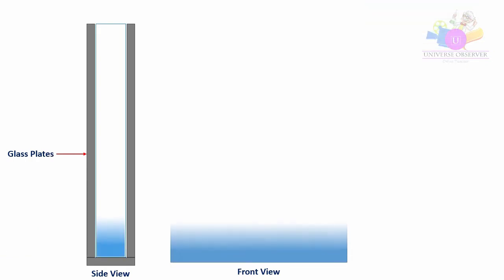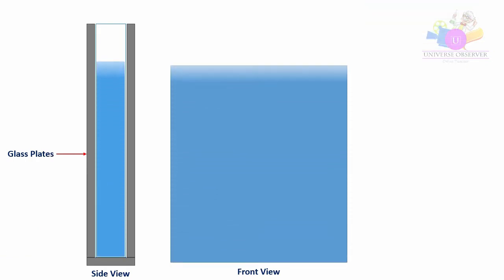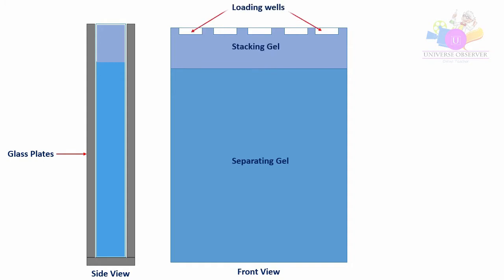In SDS page we are using polyacrylamide gel. This gel has two parts: one part is called separating gel, second part is called stacking gel. In the animation you can see the arrangement of these parts in the gel and their sizes. Separating gel has 5 cm height and stacking gel has 0.8 cm height approximately.